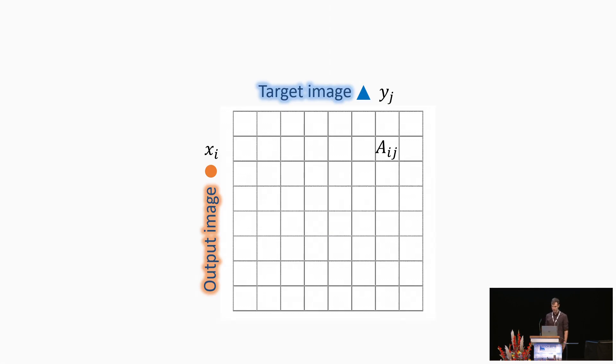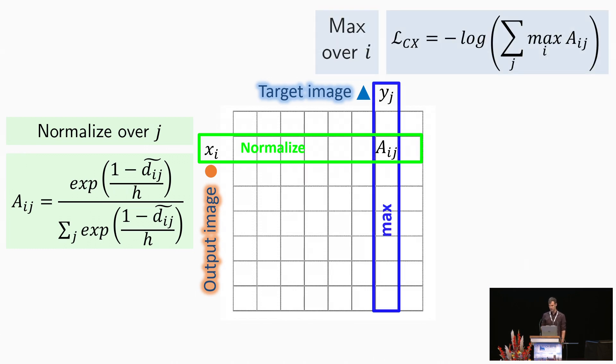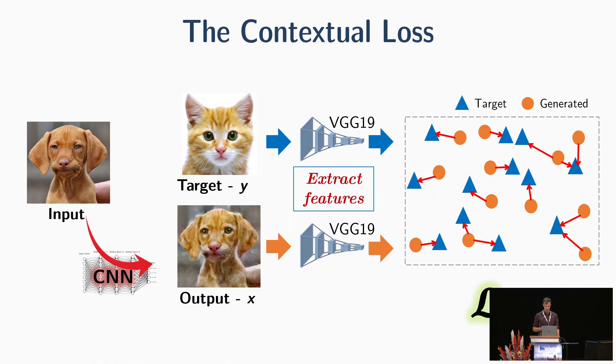To summarize, our loss function has two steps. First, we normalize each row using the softmax contextual normalization. And then, we take the max over each row. This forms the nearest neighbor field. Let's go back to the pipeline. We measure the similarity between the two point sets representing the images using the contextual loss I just described.